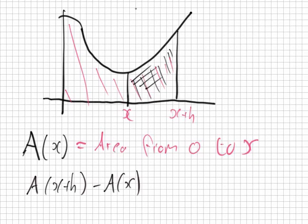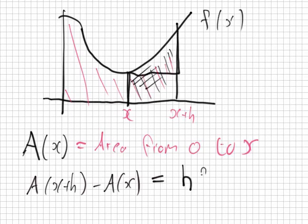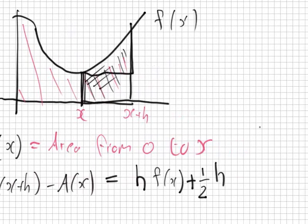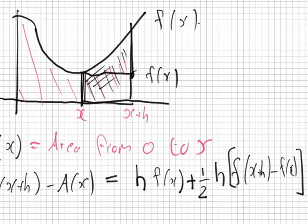There's another way to calculate the area of that piece. If the piece is really small, we can say it's roughly going to equal this rectangle plus this triangle. The base of the rectangle is h, and if I call this f(x), the height is f(x), so the rectangle is h times f(x). For the triangle: a half times base h times height f(x+h) minus f(x).